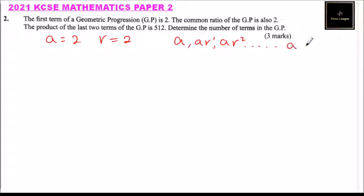The last term is ar^(n-1). So this is the last term. Since there are two terms, the one that is before this one, we can put it like this.